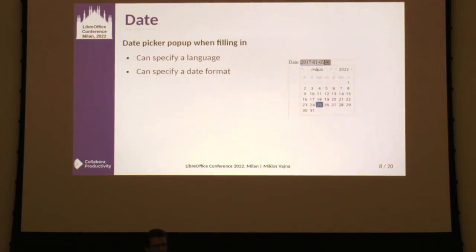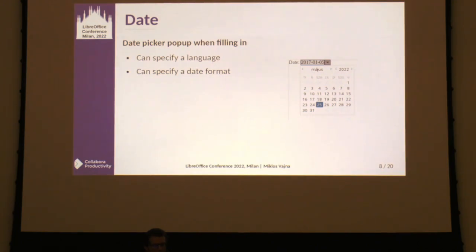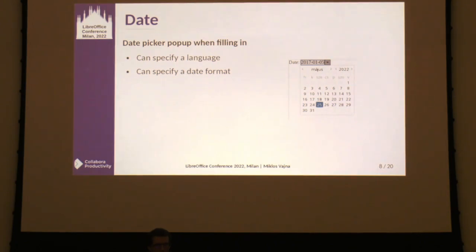The date content control is somewhat similar to the drop-down, because we show additional VCL widgets when you navigate into it — a date picker. It has less visible features, like specifying the language used for formatting: you get a timestamp from the date picker, need to turn it into a string, and can specify a date format and language. LibreOffice has good knowledge about date formatting; it's more a matter of hooking this date content control up to the usual date formatting machinery.